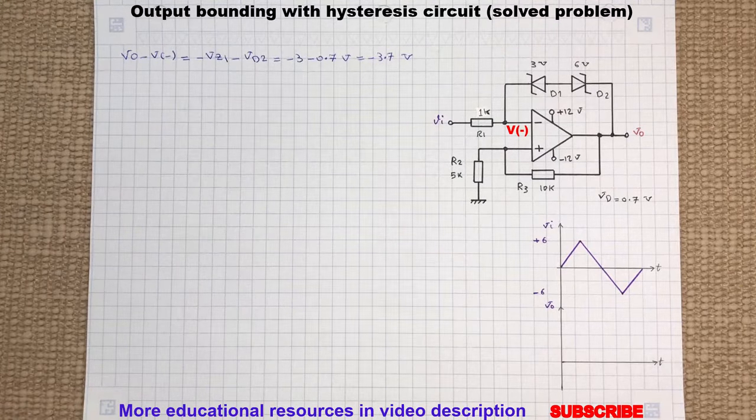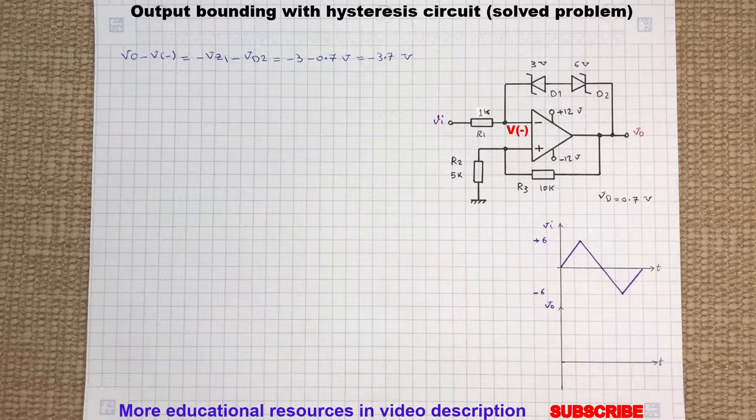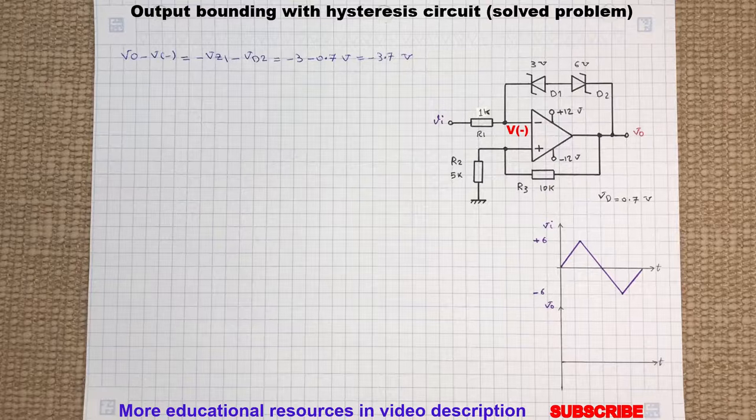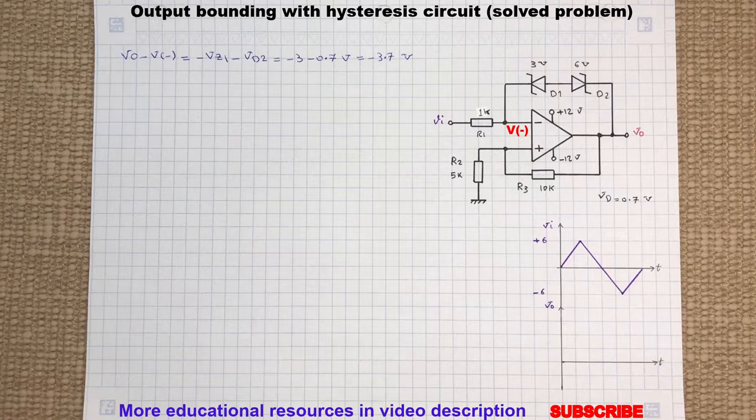Now let's assume the op amp output is at a positive high. This will push D1 in forward bias and D2 in reverse bias. So the voltage across the diode will be limited as the following.